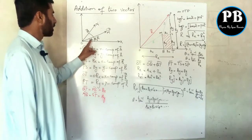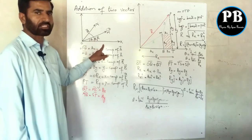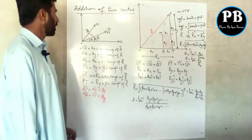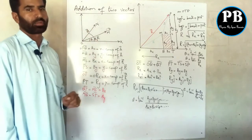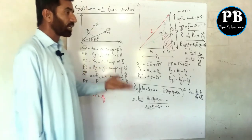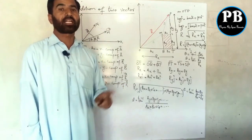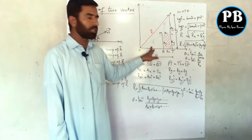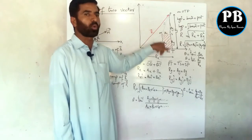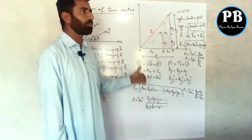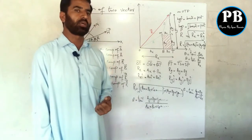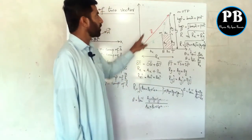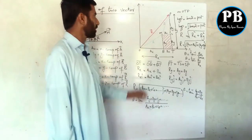Vectors A and B make angles theta 1 and theta 2 with the positive x-axis respectively, represented by lines OM and ON. We want to add these two vectors by the head-to-tail rule. We redraw vectors A and B such that the head of the first vector joins the tail of the second vector. The resultant is obtained by joining the tail of the first vector to the head of the last vector.